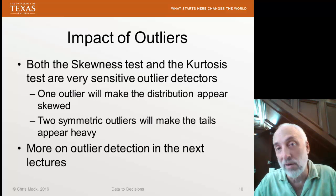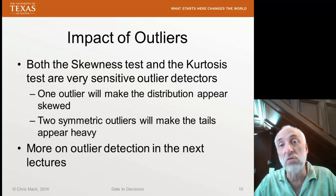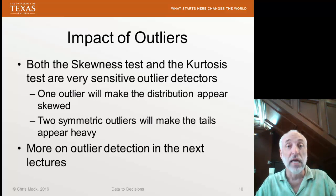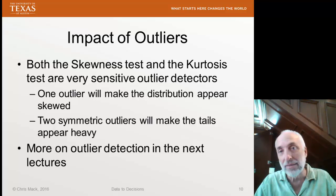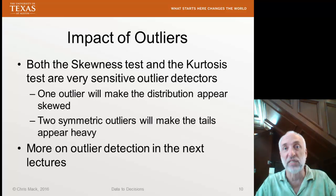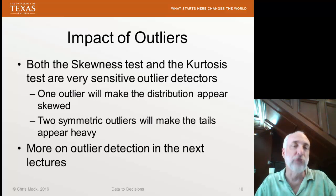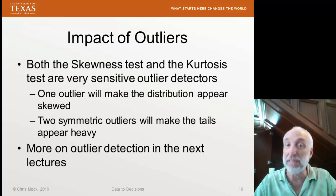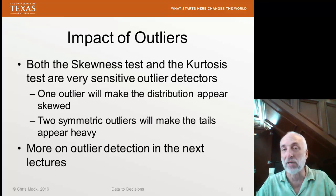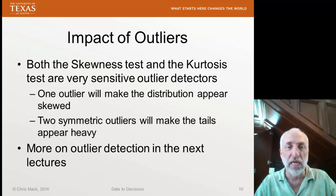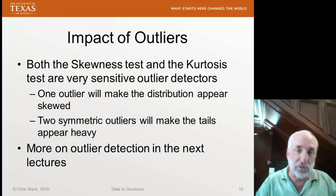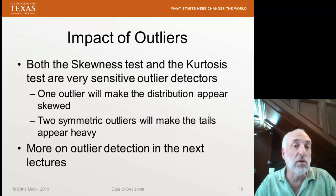One other thing to be aware of is that both the skewness test and the kurtosis test are very sensitive outlier detectors. In fact, any test for normality is almost by default a test for outliers as well. Why? One outlier, if it's big enough, is generally enough to make the distribution look non-normal. An outlier can make the distribution appear skewed. If I have a couple of outliers, one on either side of the mean, then it will appear that we have these heavy tails.